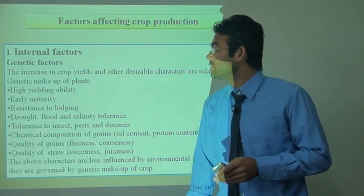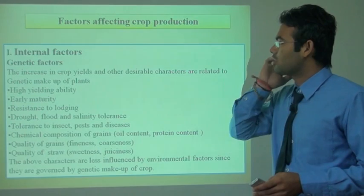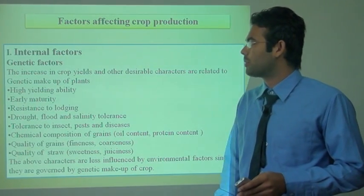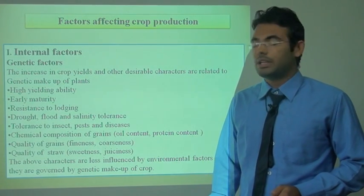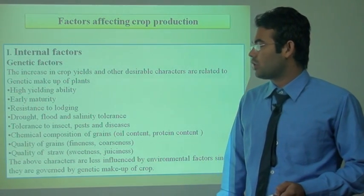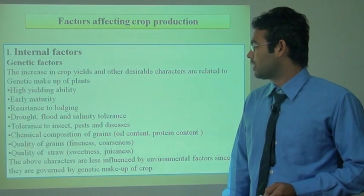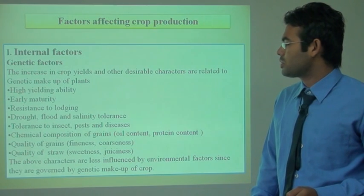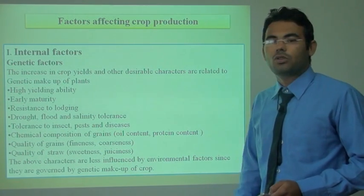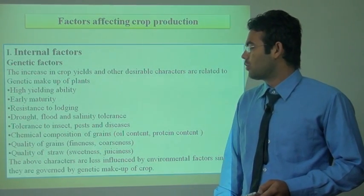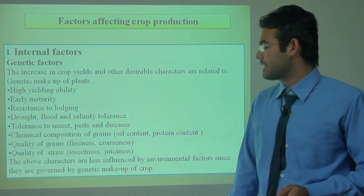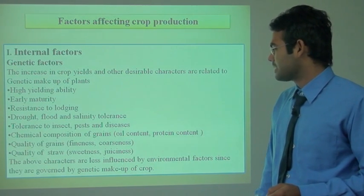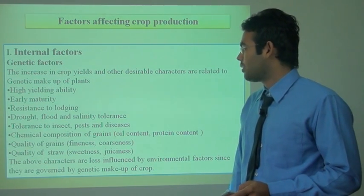In internal factors, there is a genetic factor. The increase in crop yields and other desirable characters are related to the genetic makeup of the crop, like high yielding variety, early maturity, resistance to lodging, drought, flood and salinity tolerance, tolerance to insects, pests and disease, chemical composition of grains like oil content and protein content, and quality of straw like sweetness and juiciness. The above characters are less influenced by environmental factors since they are governed by the genetic makeup of crops.